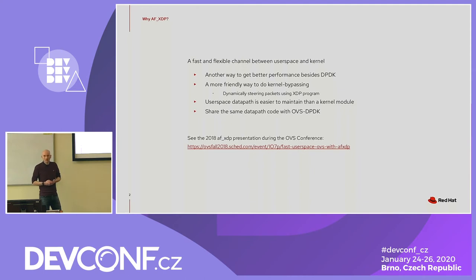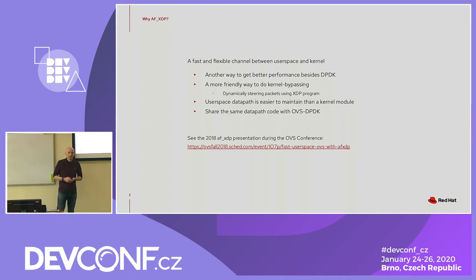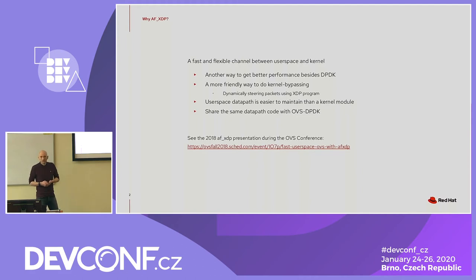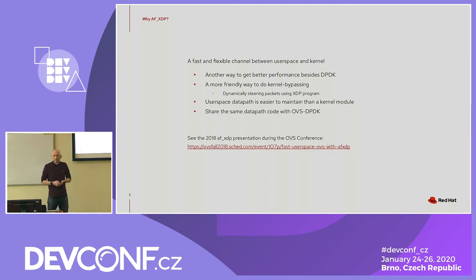AF-XDP has the advantage that it's a little bit more friendly. You can either decide that you want the packets to be handled by the kernel and then sent to user space, or you could say you want packets to be directly sent to the kernel for normal processing. From an OVS perspective, it's purely a user space application, so you don't have to worry about updating a kernel module, which makes it easier to do quick changes or experimental phases.